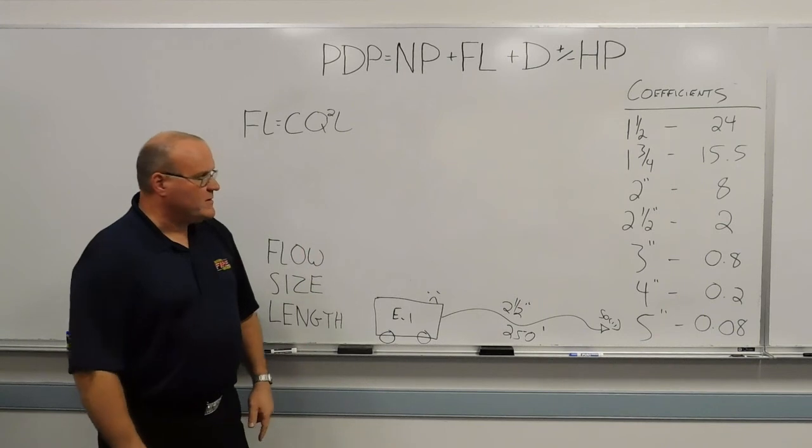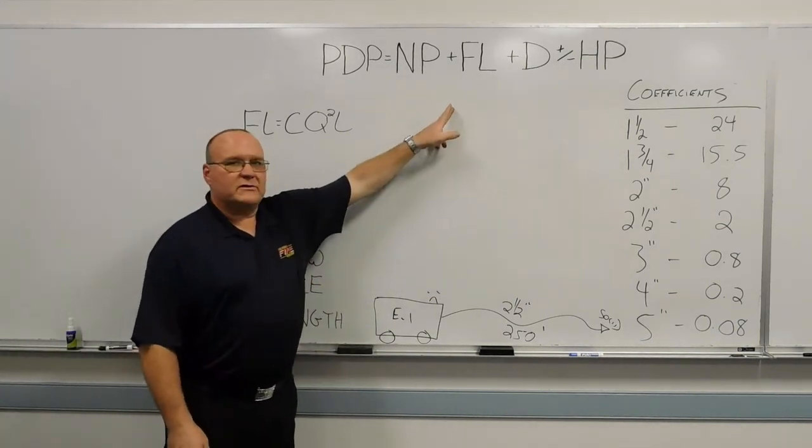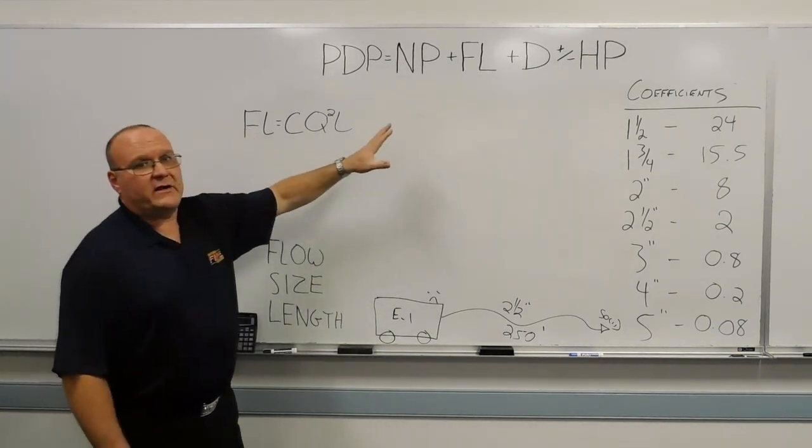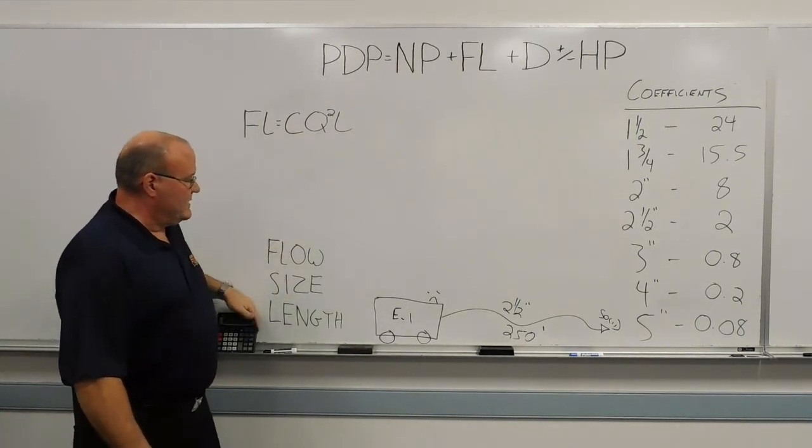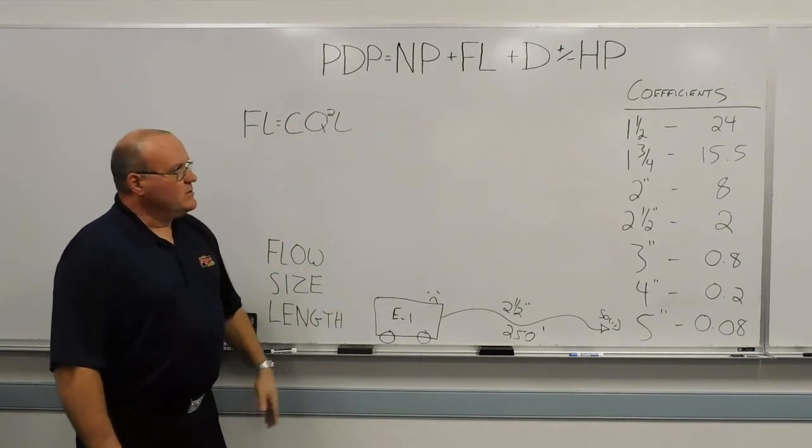So coefficient method, getting to friction loss. Any method that you use to calculate friction loss, you need to account for the flow, the size, and the length of hose. So we're going to do the same thing here.